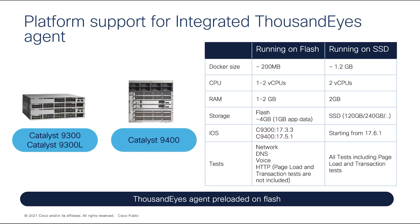Now let's look at the details on the first benefit. We are supporting the ThousandEyes Enterprise agent on the Catalyst 9300 family, including the 9200L series and Catalyst 9400 series. We have two versions of the ThousandEyes Enterprise agent. The first is the flash version — a lightweight Docker agent that takes about 4 GB of flash space. It requires a minimum of IOS XE 17.3.3 for the 9300 and 17.5.1 for the 9400. With this image, you can run all ThousandEyes tests except browser-based tests such as page load and transaction tests, since it is lightweight and does not include a browser.